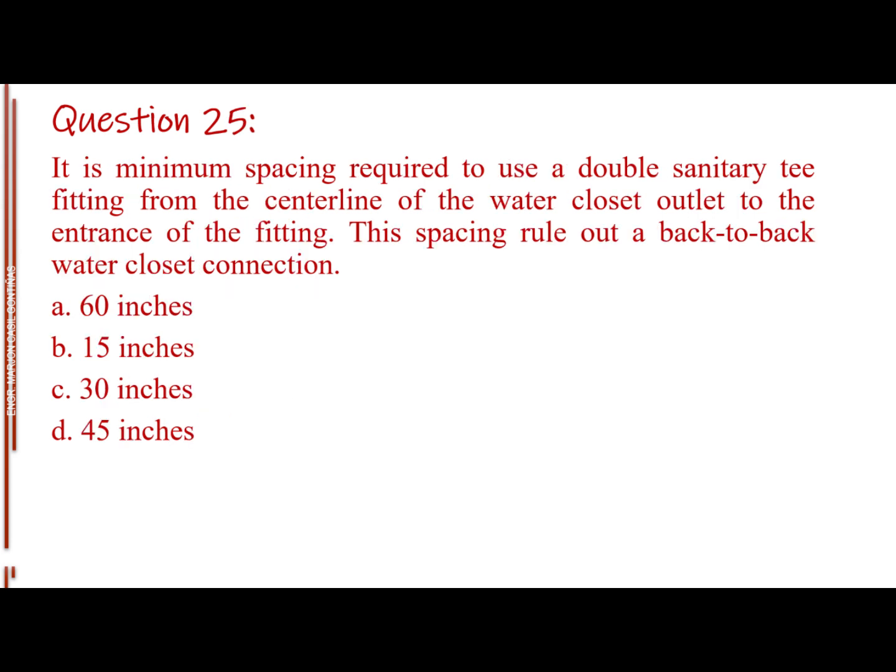Question number 25. It is minimum spacing required to use a double sanitary T fitting from the centerline of the water closet outlet to the entrance of the fitting. This spacing rule out a back-to-back water closet connection. Letter A, 60 inches. Letter B, 15 inches. Letter C, 30 inches. Letter D, 45 inches. The answer is Letter C, 30 inches.